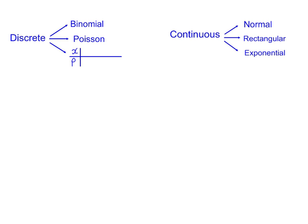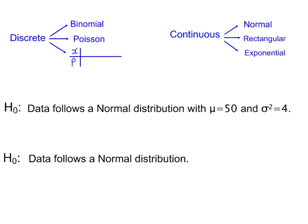We can test both the distribution and its parameters. For H0, we may be testing both the probability distribution and its assumed parameters. Alternatively, for H0, we're only testing the probability distribution, because we've already calculated the parameter values from the given data — so we're not testing those. The implications of this will be on the number of degrees of freedom.